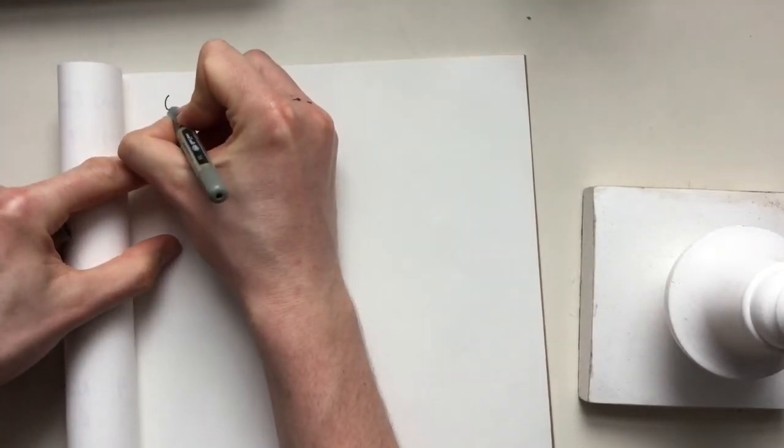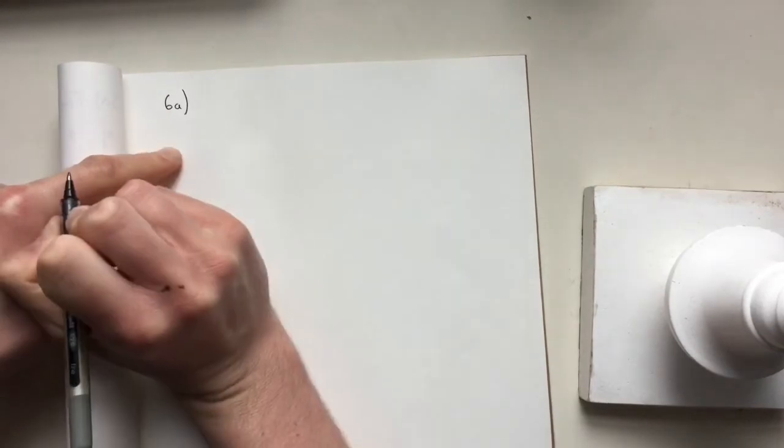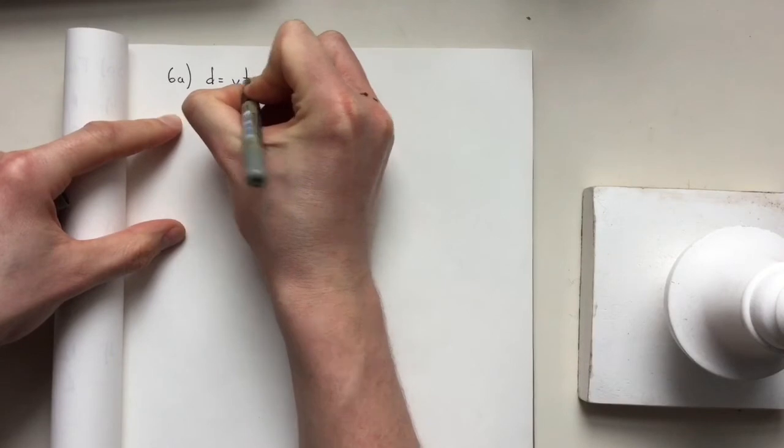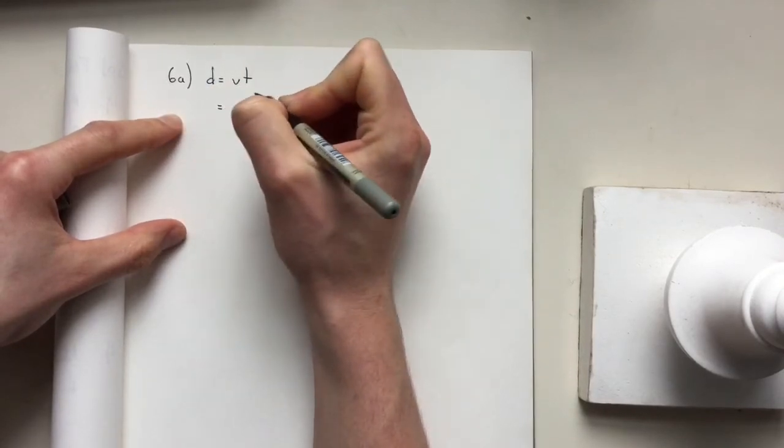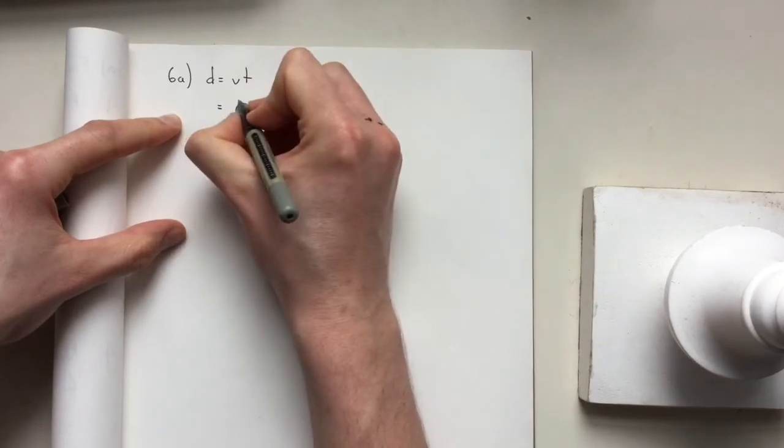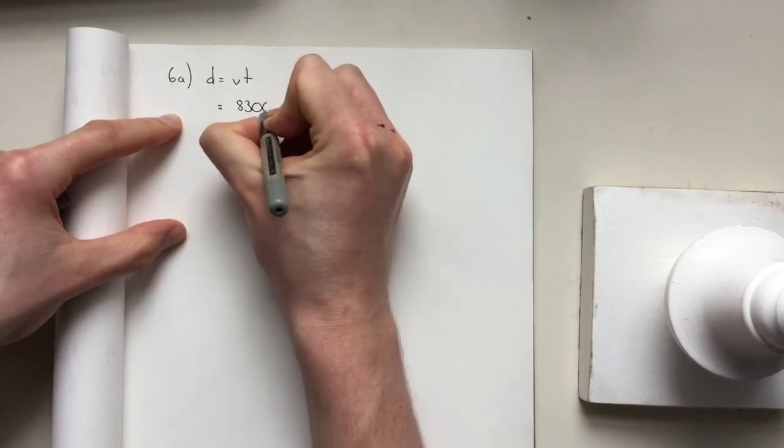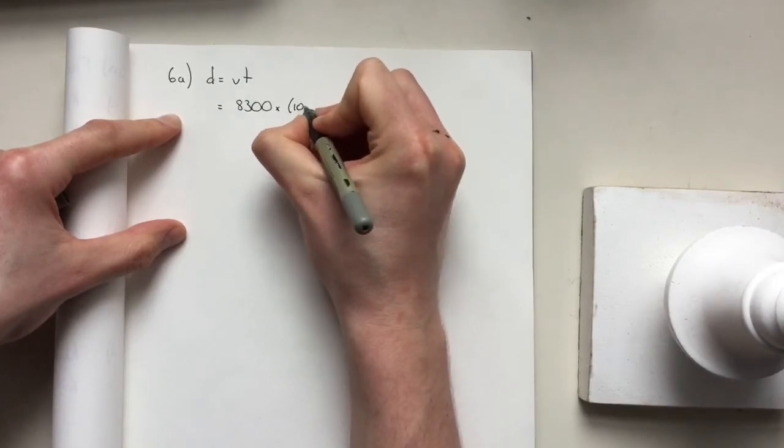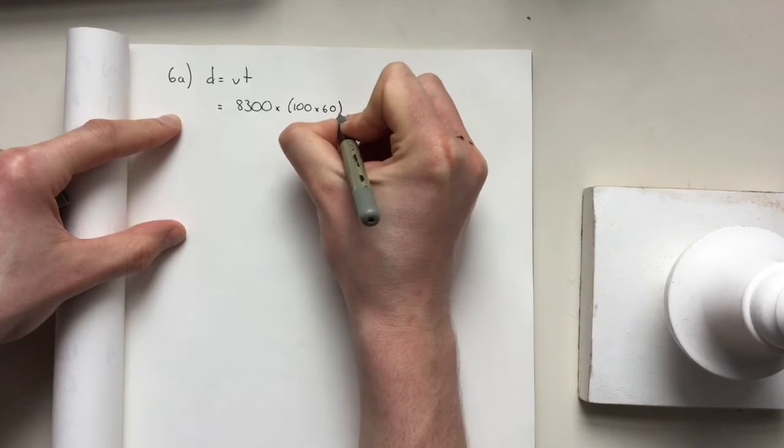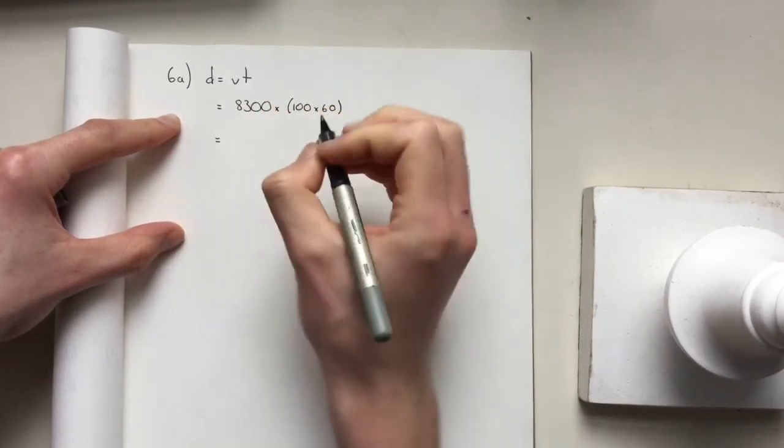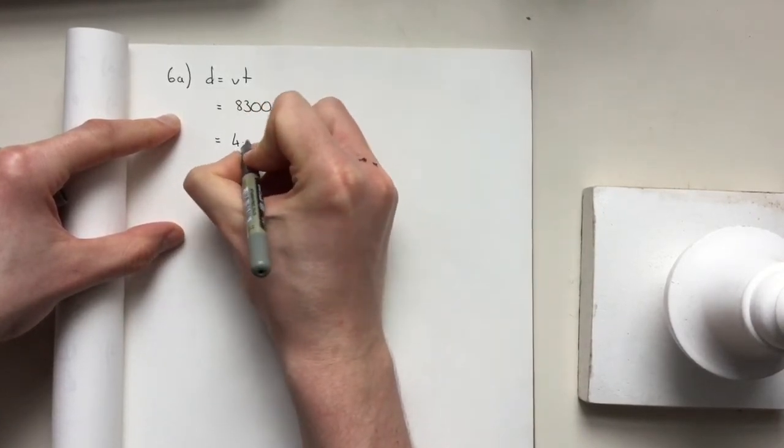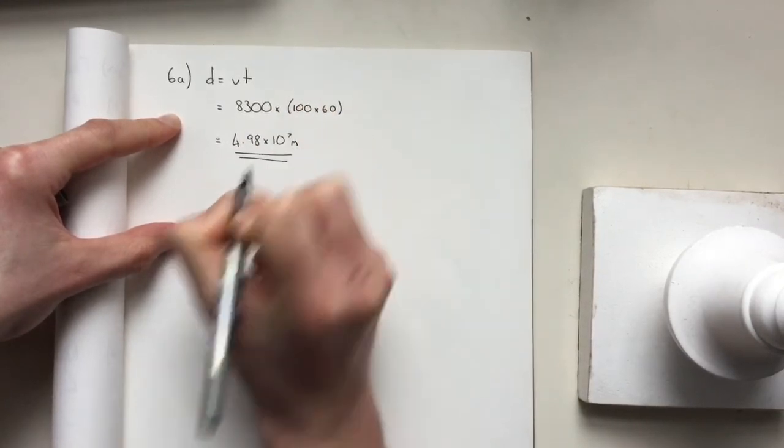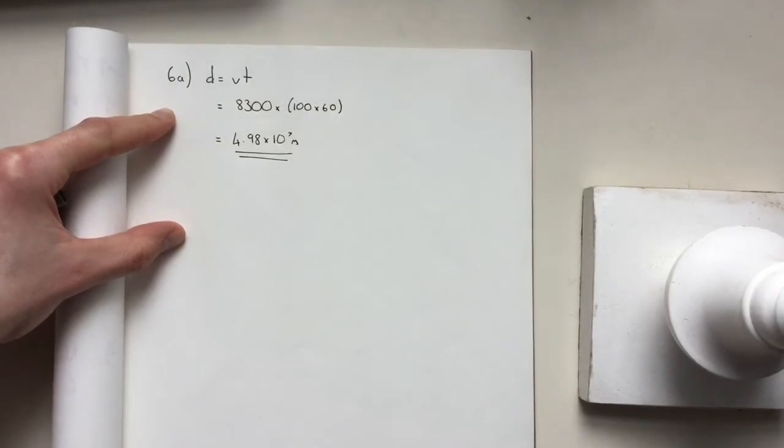A good question involving distance speed time. We don't need to change anything because it's asking us for the distance. The speed is 8,300. Time was 100 minutes to orbit the Earth. We know minutes needs to be in seconds, so 100 times 60 will give us that in seconds. That gives us 4.98 times 10 to the 7 meters.